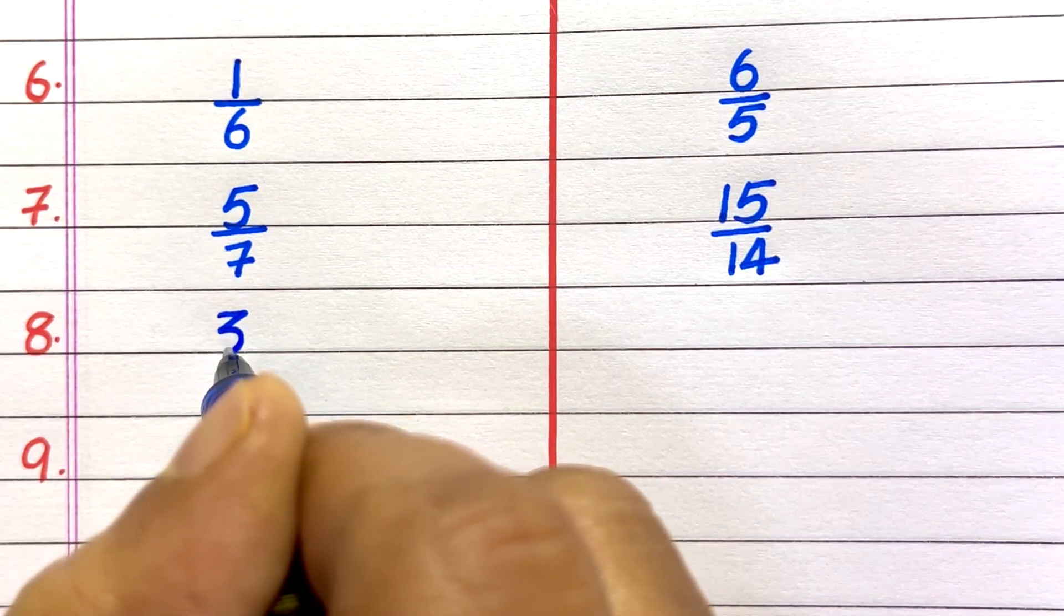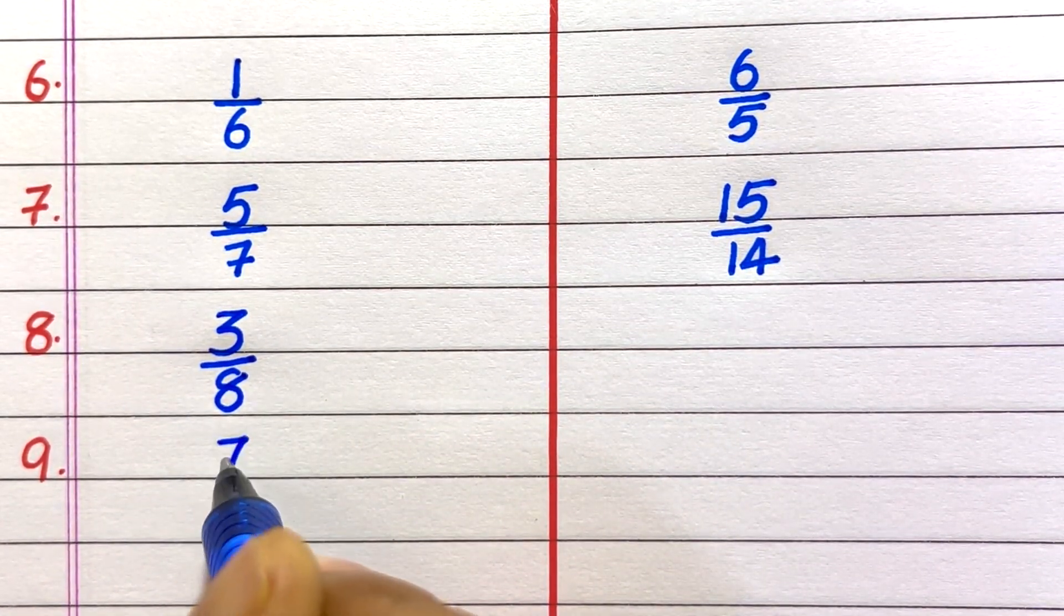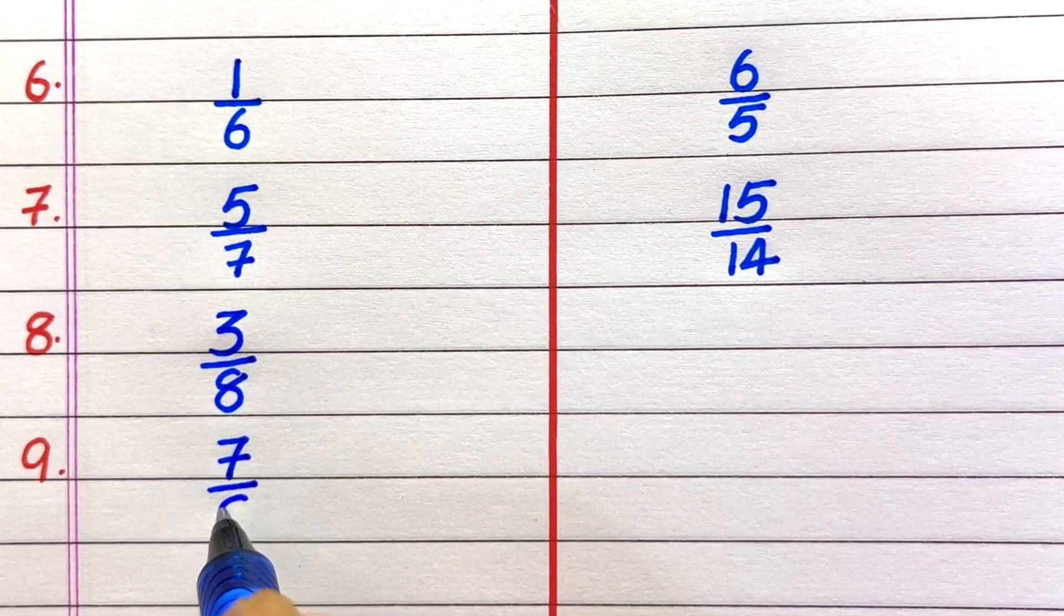Eighth example of a proper fraction is 3 by 8. Ninth, 7 by 8.